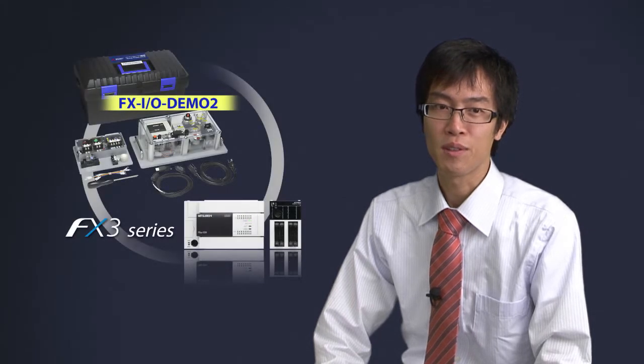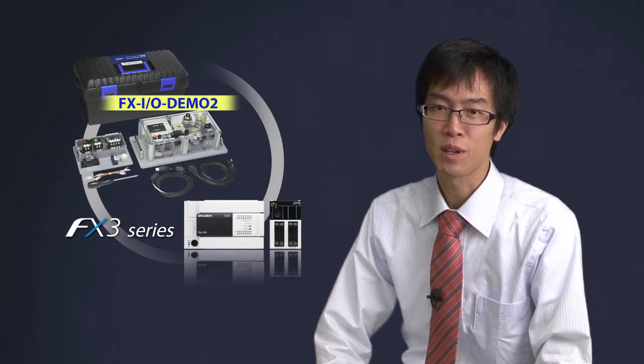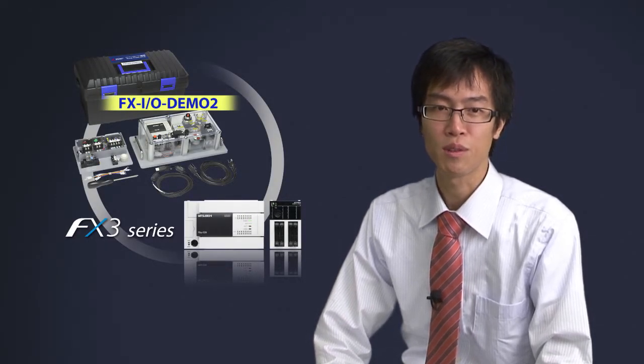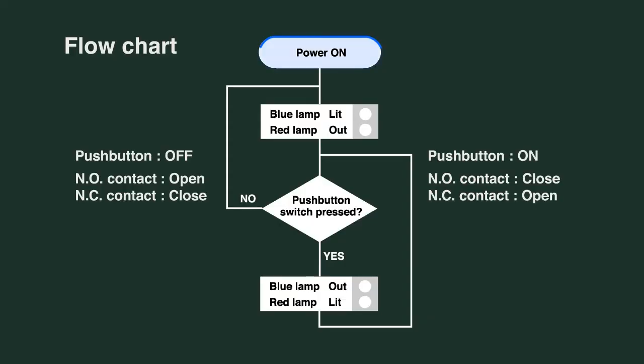Another type of representation, called the flowchart, is helpful when considering the overall series of operations. This flowchart shows that when the power is turned on, the blue light turns on and the red light turns off.